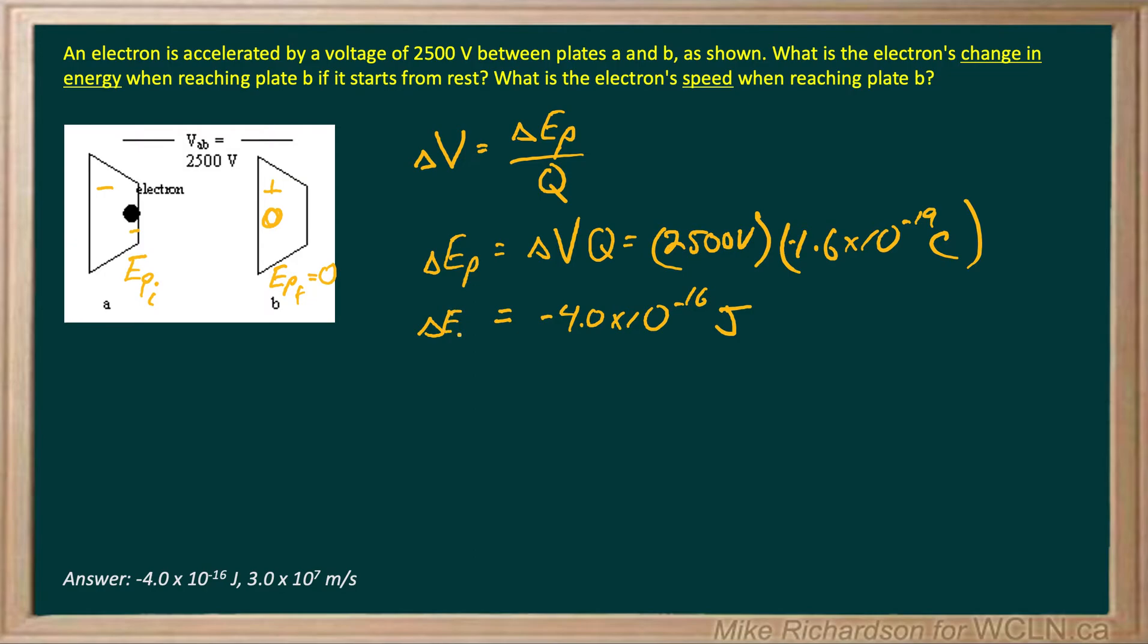Our change in energy is negative, which means that electron has lost potential energy as it falls across that gap.